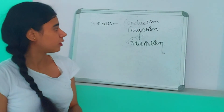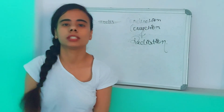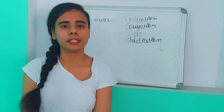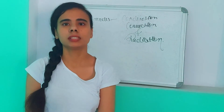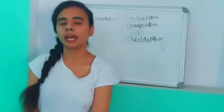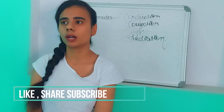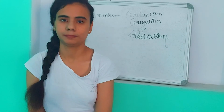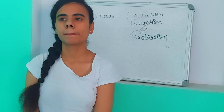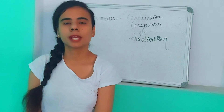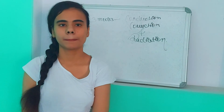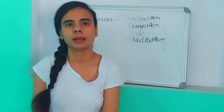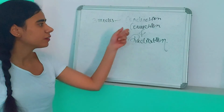First, we will learn about conduction. Conduction is the transmission of heat in which the actual movement of particles does not take place. For example, when nails attached to an iron rod with wax are placed over a flame, the nails start falling one by one from the end above the flame — this is due to conduction. Conduction takes place in solids.